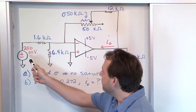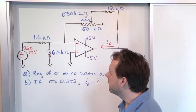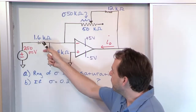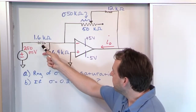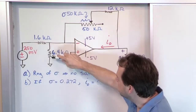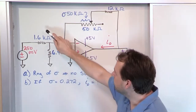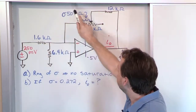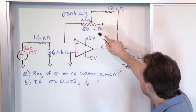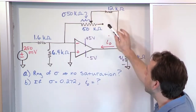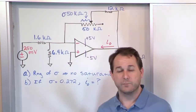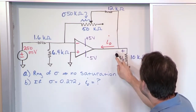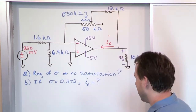First of all, we have an input source that's 250 millivolts — that's a constant DC source. The input is being driven through a resistor, but notice we have another resistor going off to ground as part of the input resistance network. We also have a feedback resistor, but we have this kind of weird thing going on in the feedback network. And then we have an output resistor and the output voltage is tapped off of that.